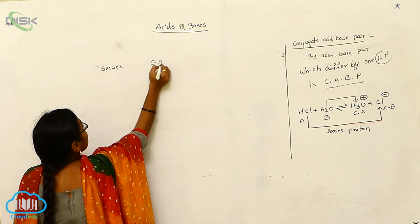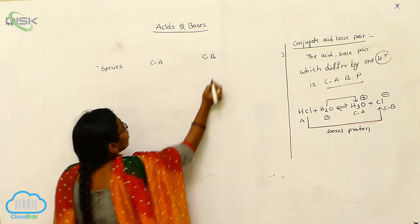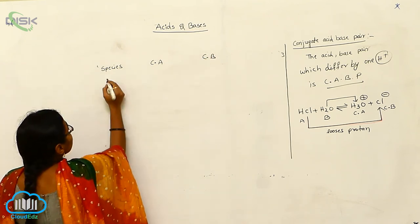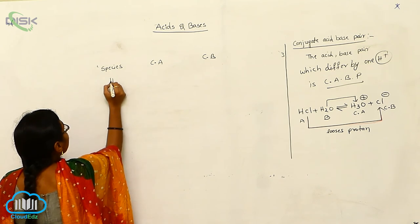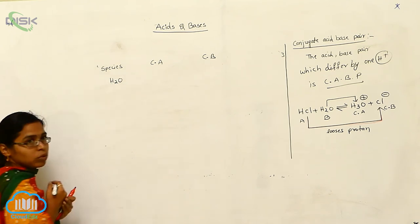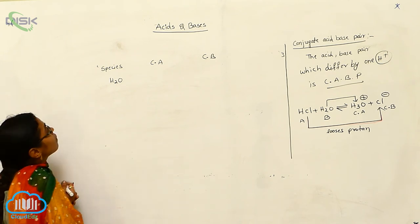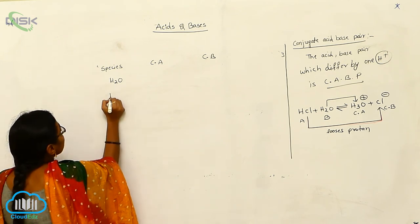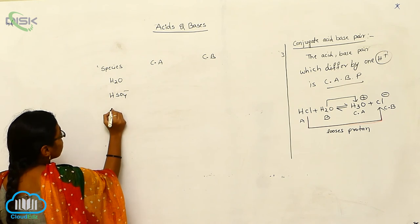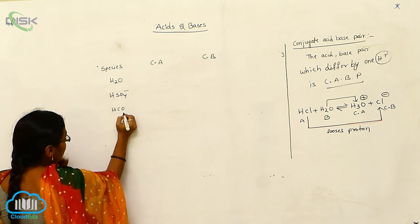I am taking the conjugate acid and the conjugate base. For example, taking H₂O and HSO₄⁻, as well as HCO₃⁻, to illustrate the conjugate acid-base pairs.